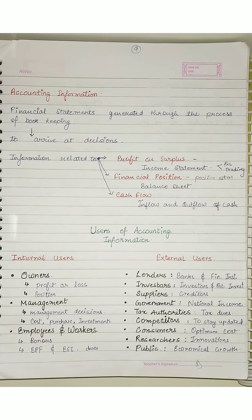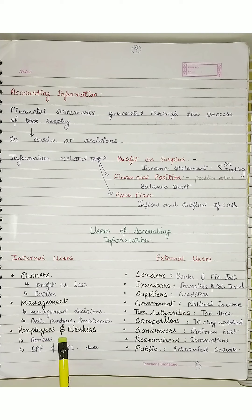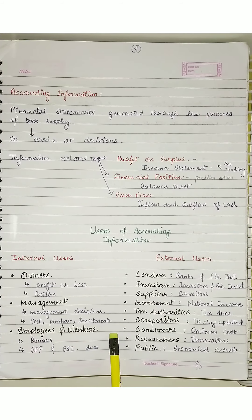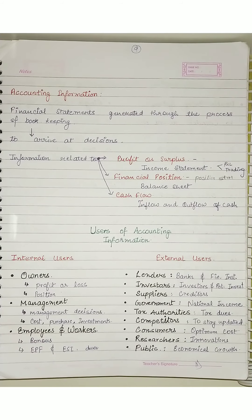What is management's interest in financial information — in accounting information? They need to take management decisions: when and how to work, how effectively they are working, which costs, where to purchase from, where to invest — all these decisions will be taken by management. That is how important accounting information is for management.